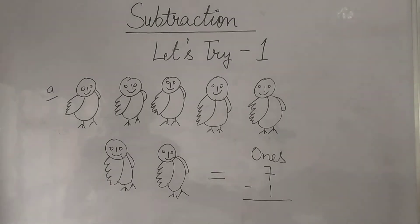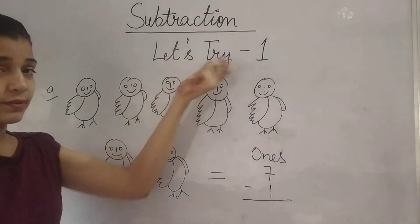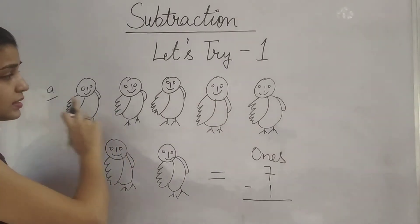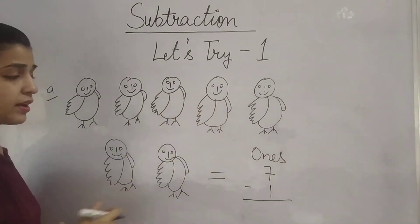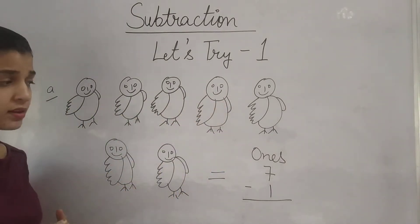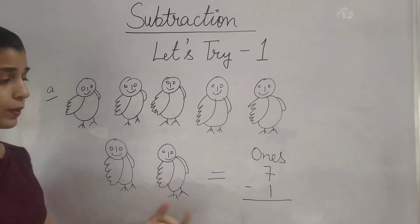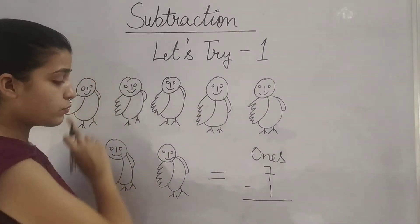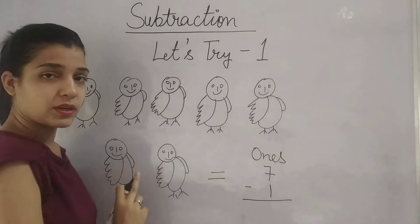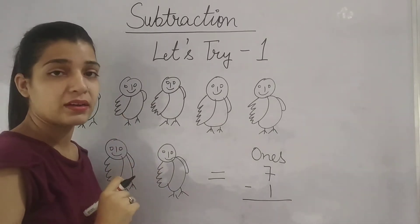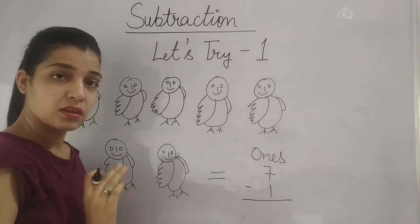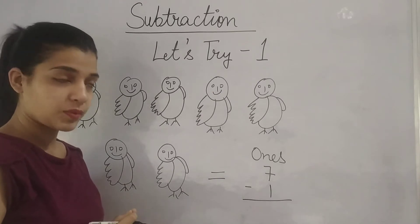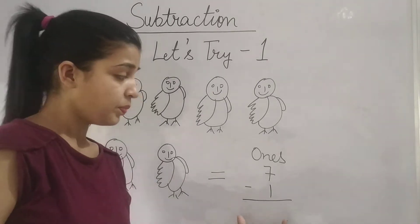So let's start with 'Let's Try 1.' Question number 1, Part A. On screen there are some birds, and the question is 7 minus 1. Now what do you have to do? Out of these 7 birds, you have to subtract 1 bird.